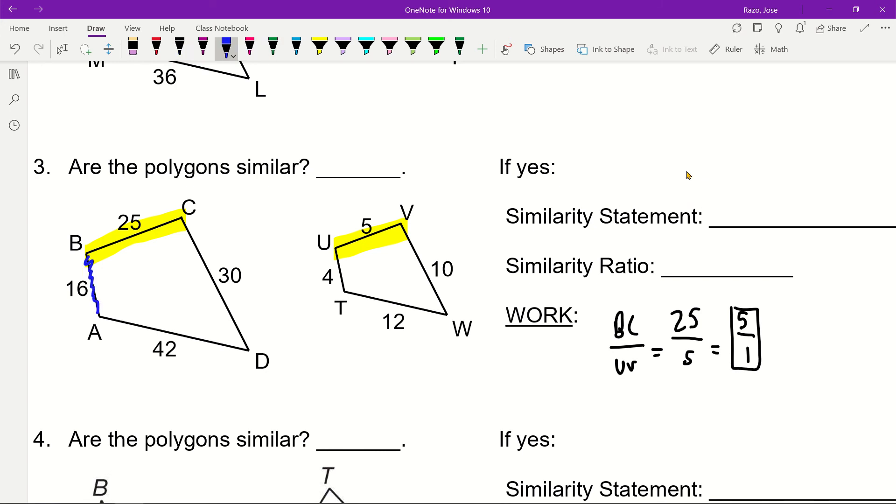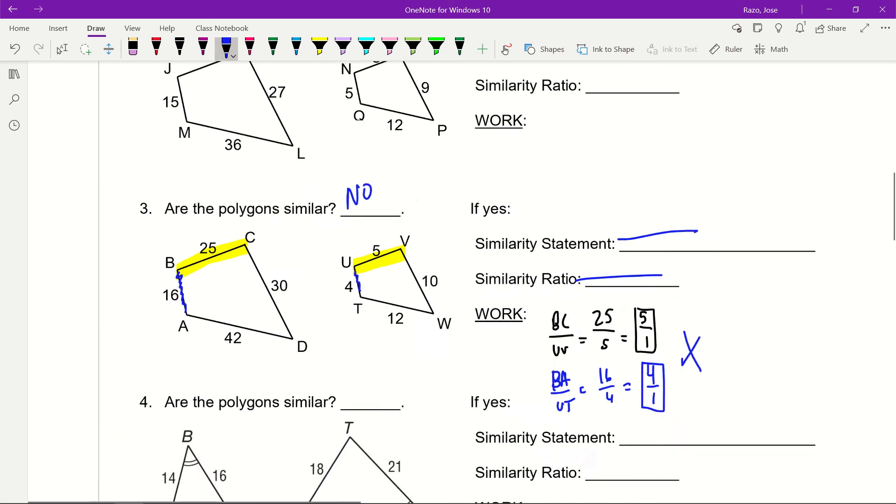Let's say we have UT and BA. That's 16 over 4, which is 4 over 1. Are these the same? Nope, not the same. That means automatically no. They're not similar because this is five times bigger and that's four times bigger. All sides have to have the same similarity ratio.